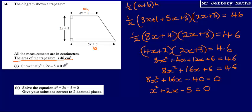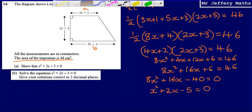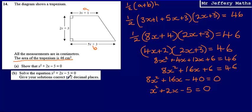For part B, we're asked to solve x squared plus 2x minus 5 equals 0, giving solutions correct to two decimal places. The phrase 'correct to two decimal places' is a hint: when a quadratic equation asks for answers to a certain number of decimal places or significant figures, it means we need to use the quadratic formula.